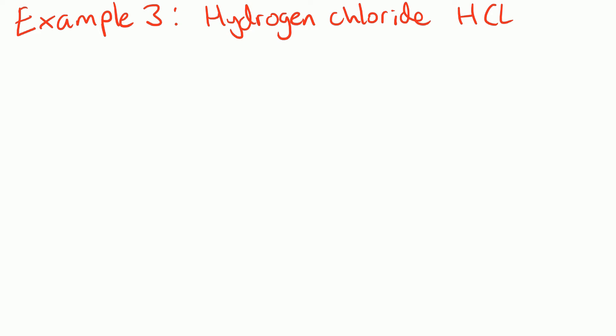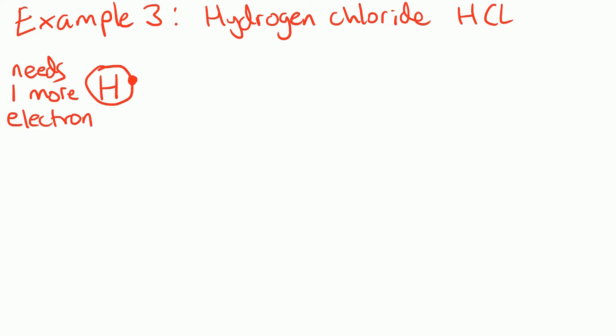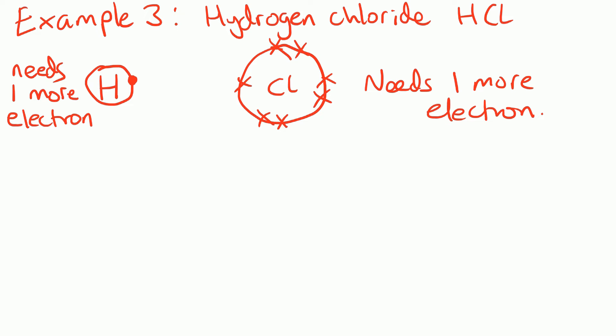In example 3, we've got a hydrogen atom joining with a chlorine atom. The hydrogen atom has only got 1 electron, so it still only needs 1 more, because that first shell is full when it's got 2 electrons. The chlorine atom is in group 7, so it's got 7 electrons in the outer shell, and that also needs 1 more electron. So we're going to start off by drawing the shells overlapping - here's the chlorine atom, here's the hydrogen atom - and once again I'm going to show the electrons they've got without sharing. So hydrogen's got 1 electron, chlorine has got 7 in the outer shell.